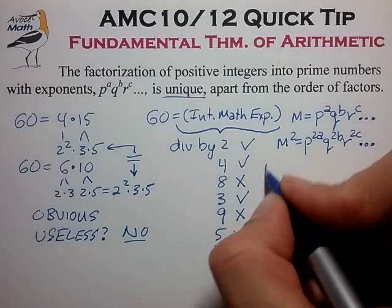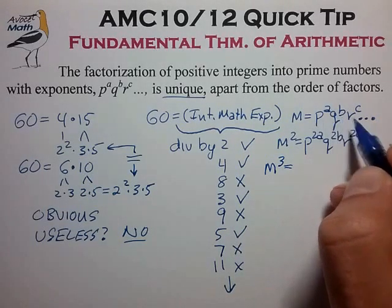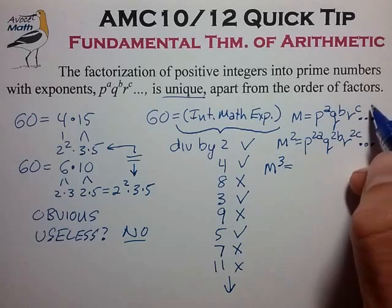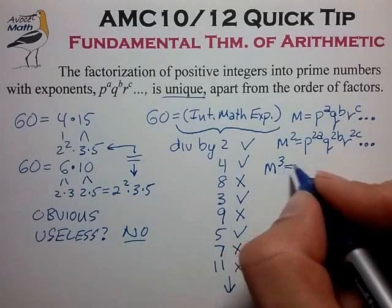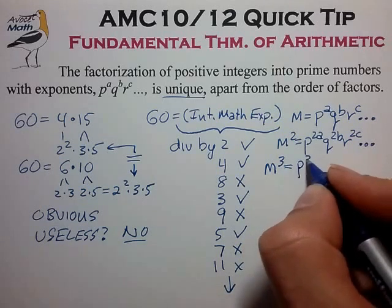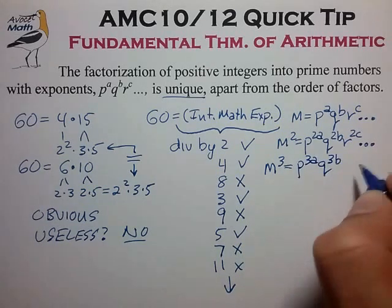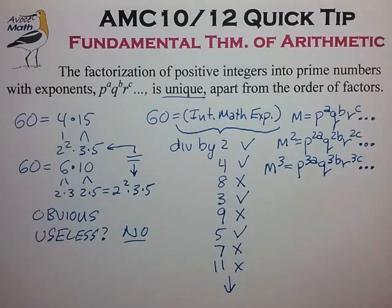And we can take this one step further. We can take a look at what the form of m cubed is. Again we can take p to the a, q to the b, r to the c, bring it to the third power and bring that third exponent down into the individual factors. And we find that m cubed is equal to p to the 3a, q to the 3b, r to the 3c, and however many prime number factors are necessary.